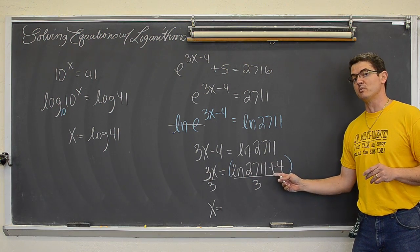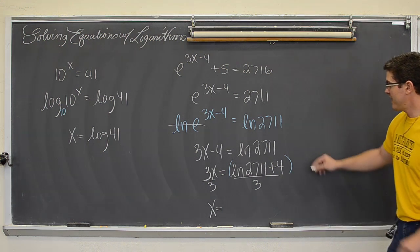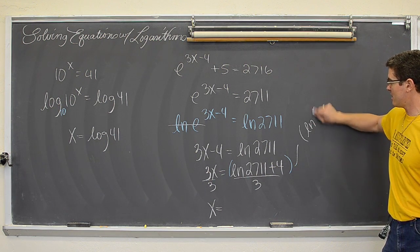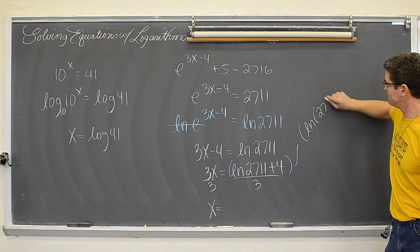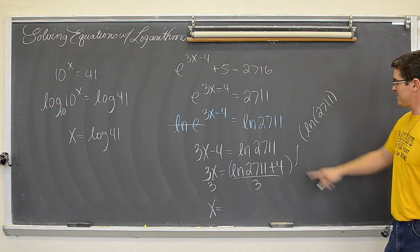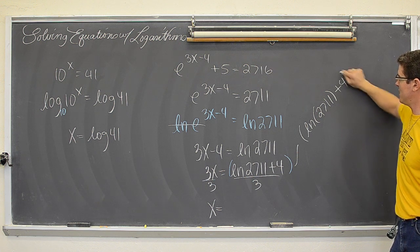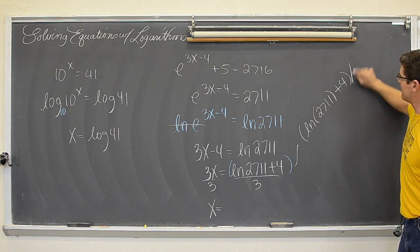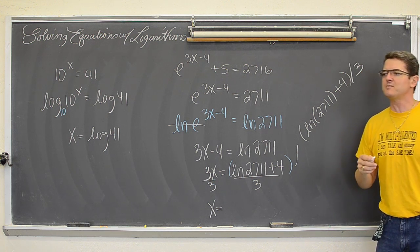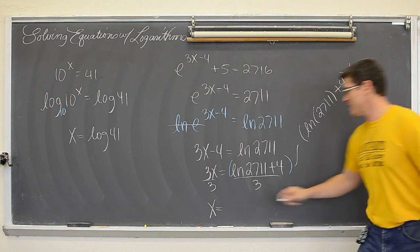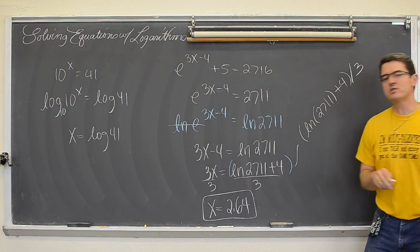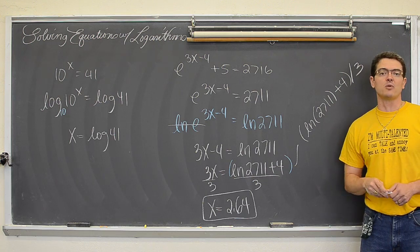If you can't then it is probably going to look something like parenthesis natural log parenthesis of 2711. Close those parenthesis plus 4 so you get that entire numerator with the two terms wrapped in parenthesis. And then divide that by 3. If you get it typed in correctly you are going to have a decimal of 2.64. So double check your use of your calculator and make sure you are getting those in properly.